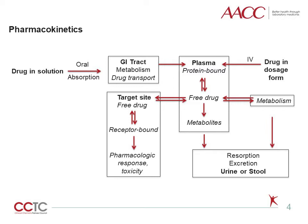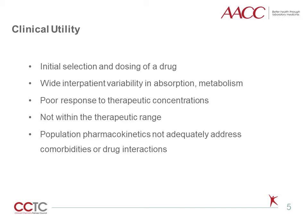Serum drug concentrations are useful in many stages of treatment. Initial selection and dosing of a drug may be guided by TDM, particularly if wide interpatient variability in absorption, metabolism, or other parameters of drug disposition is noted. Without measuring drug concentrations, it is difficult to discern which patients respond poorly to therapeutic concentrations of a particular drug and which ones simply are not within the therapeutic range. Population pharmacokinetics often does not adequately address comparability or drug interactions, so TDM is necessary for these patients.